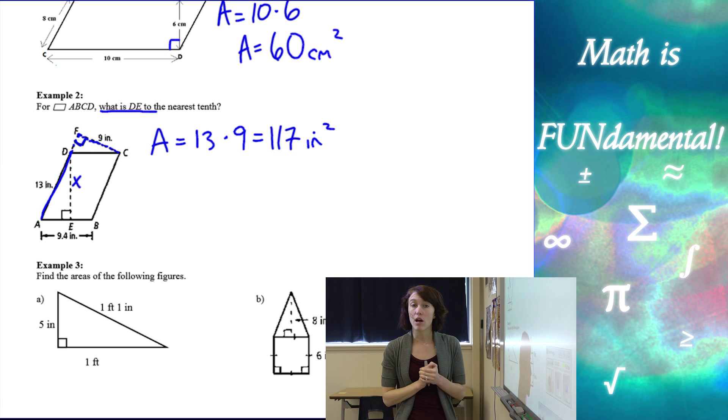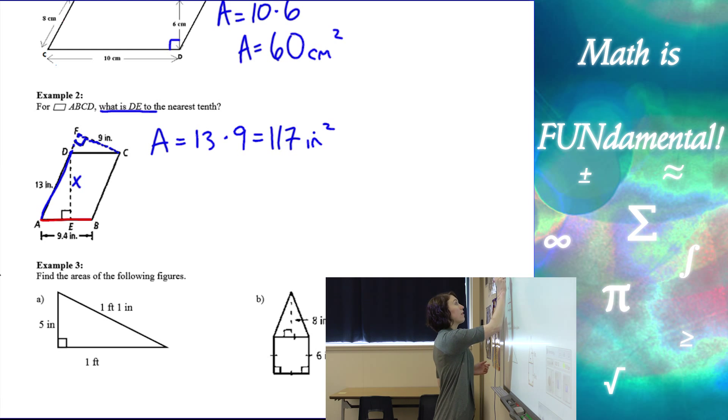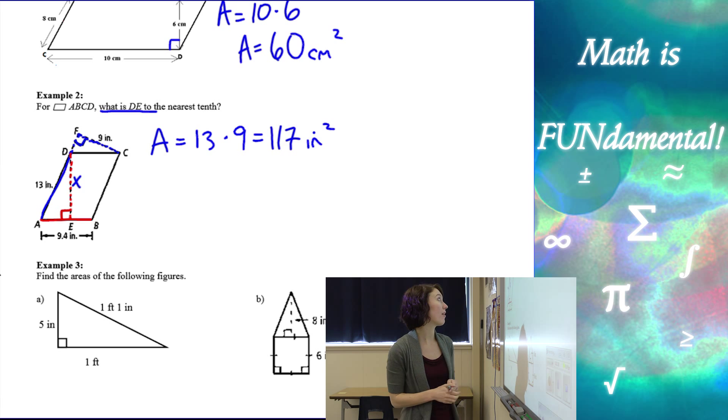Now, if we look, we also have another pair of a base and a height. Let me switch colors so you can see if I decided that AB was my base, then this length here would be my height. And because it's the same parallelogram, it's actually going to be the same area.